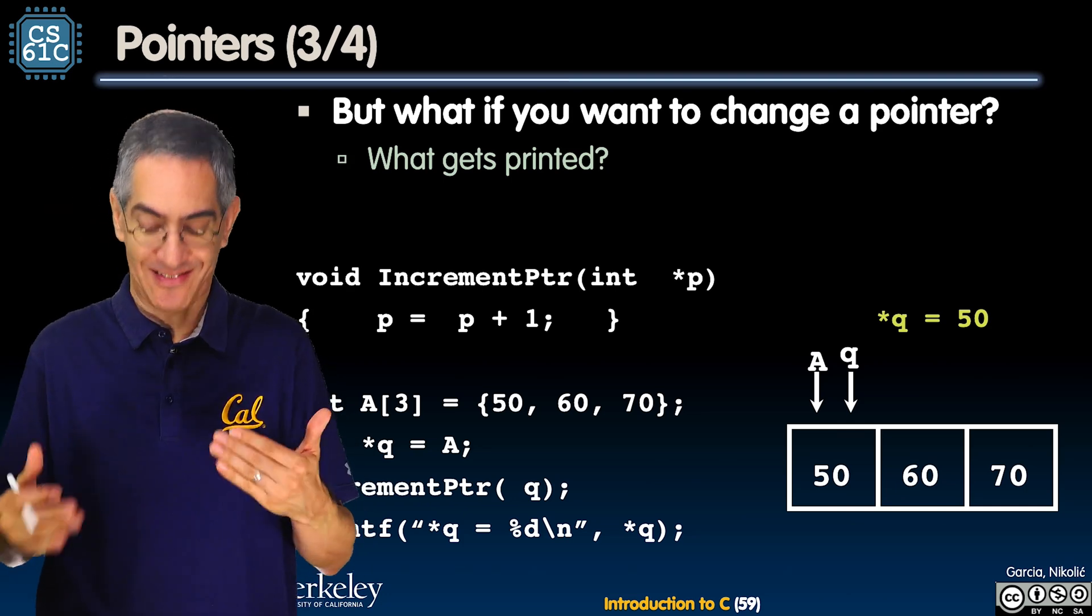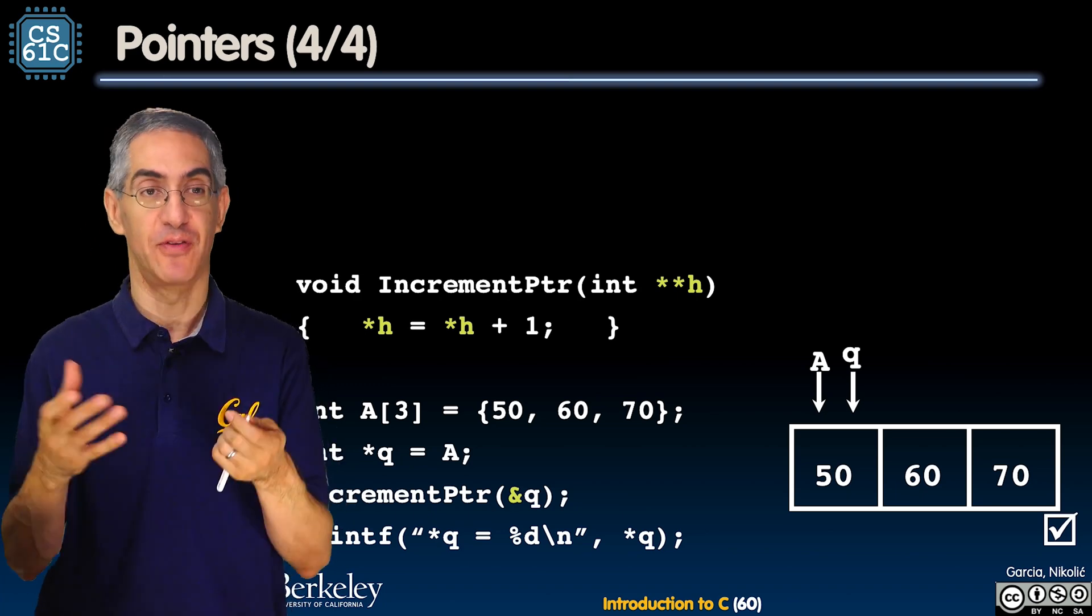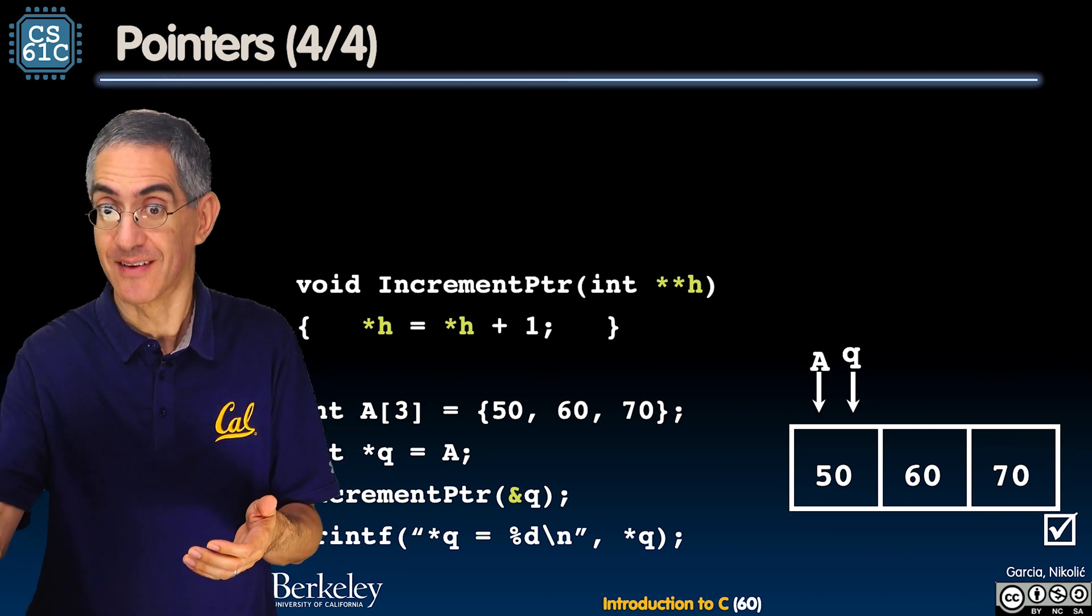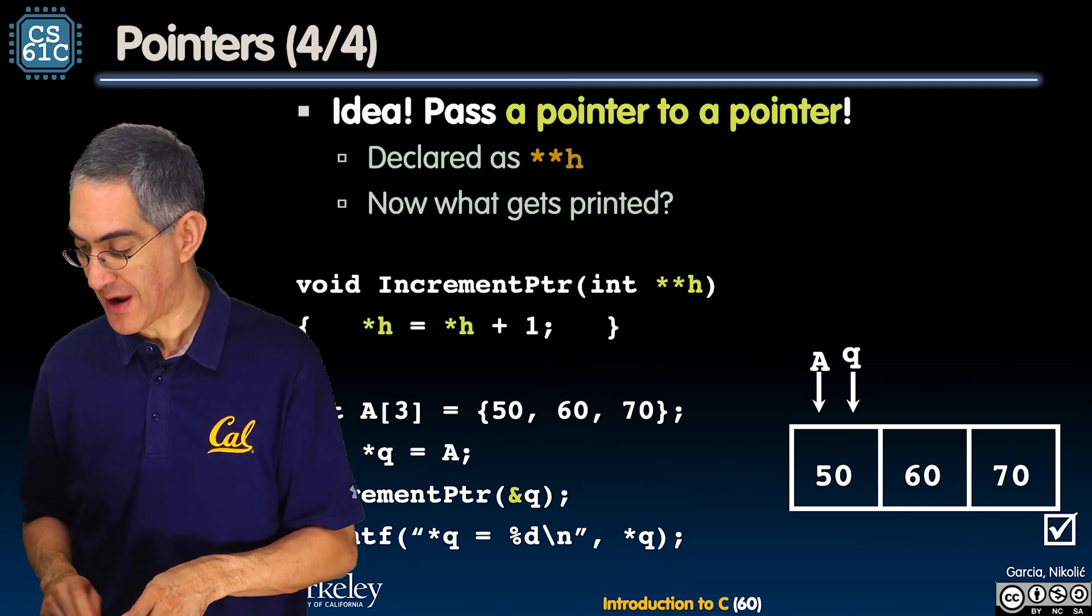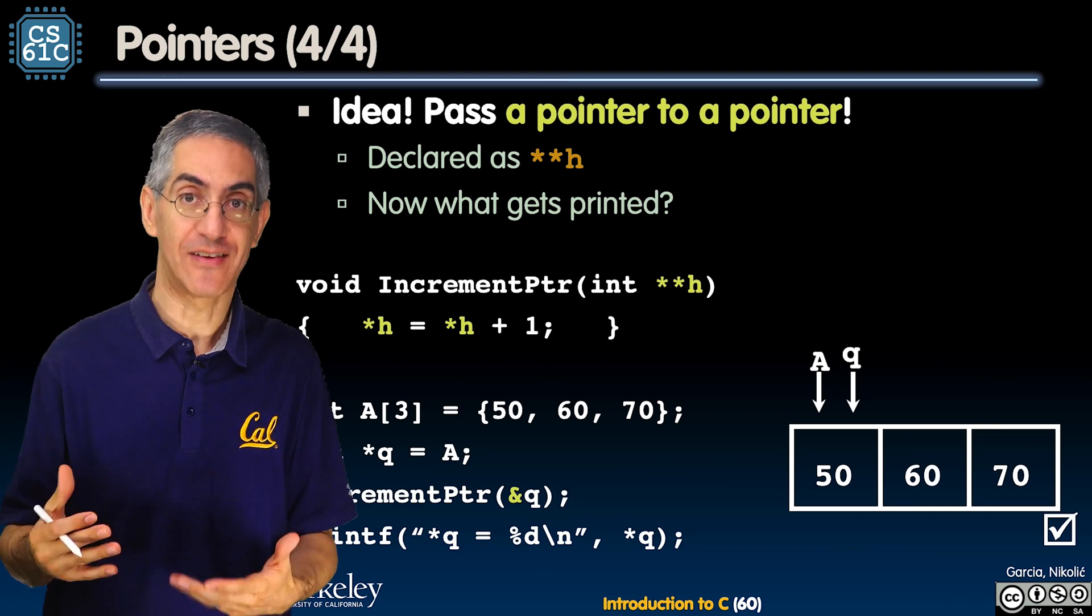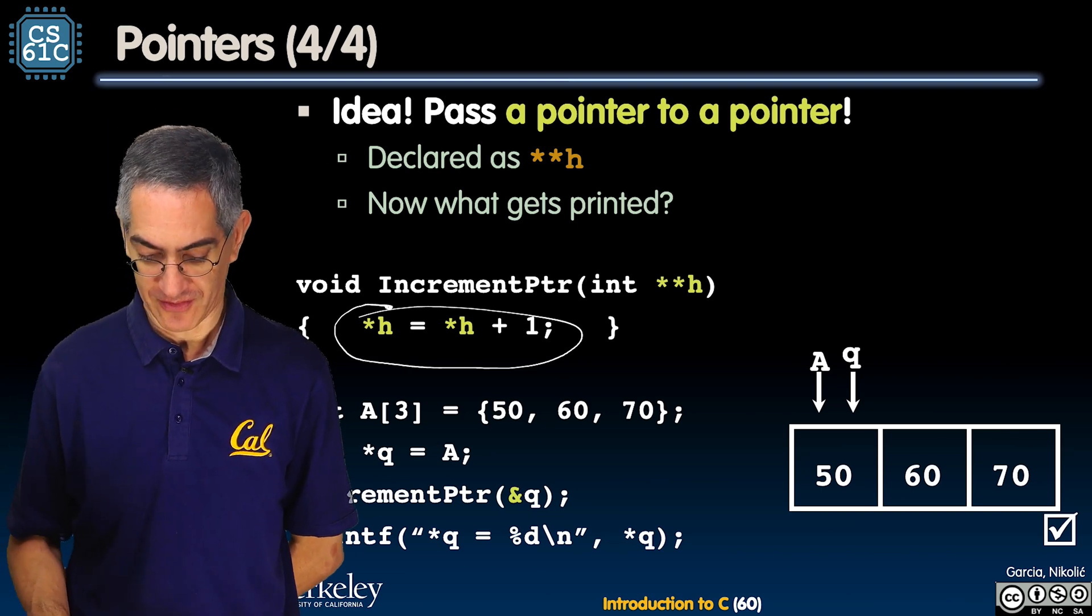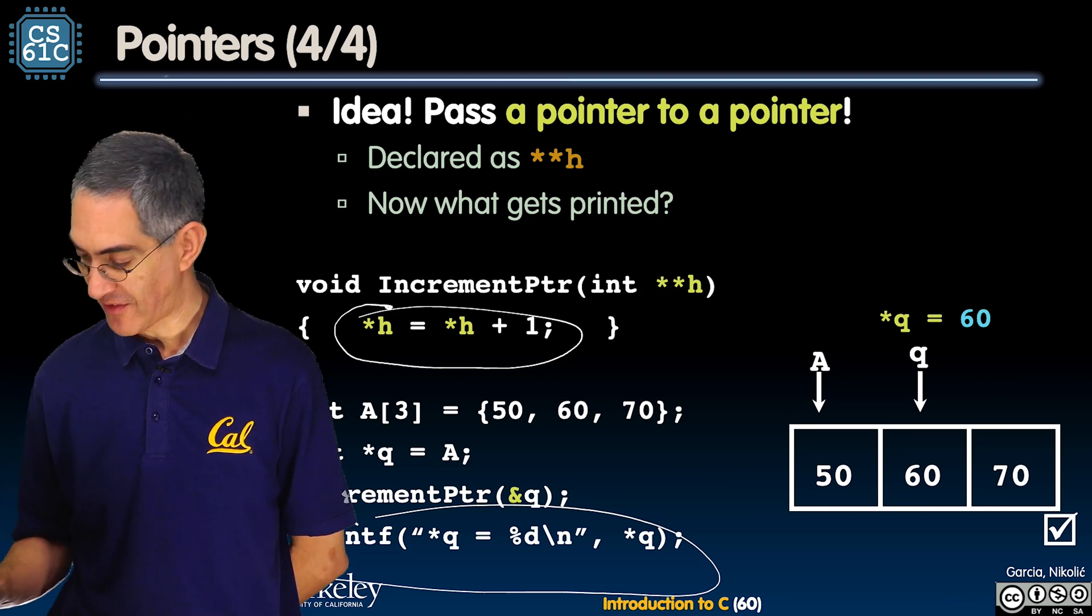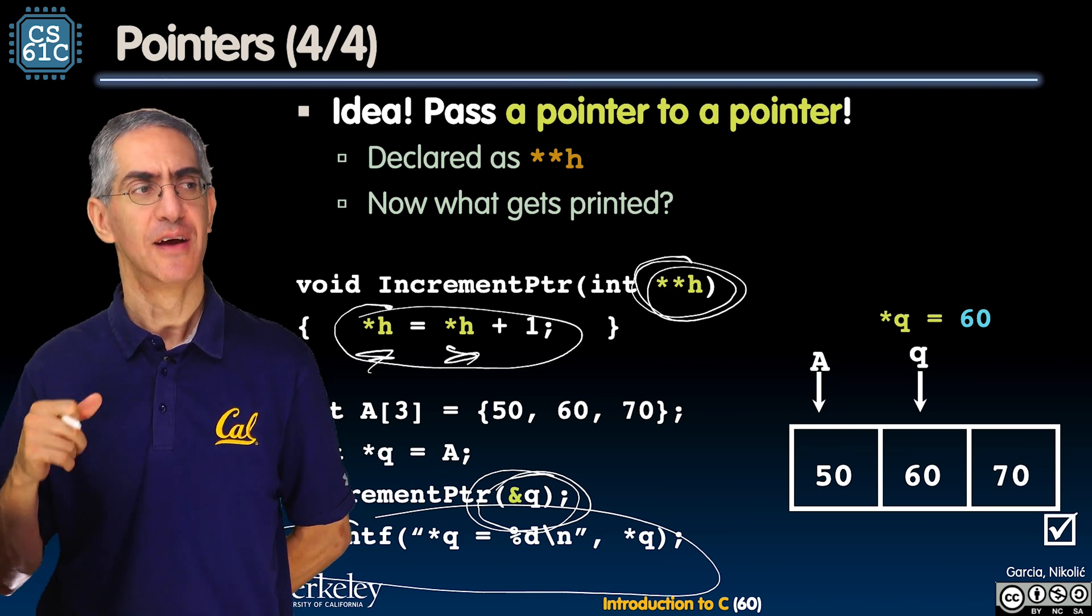So you pass in Q's address. Well now what is the type for the increment_pointer that's receiving that? It's not a pointer to an int, it's a pointer to a pointer to an int. And by the way we call it H - we call this a handle, so it's a pointer to a pointer. H is a handle. So now what gets printed? Now I pass in the address of Q, now I can change Q. **H - the way you get to that, the way you dereference that handle, is you say *H. This is going to move where Q is one over. I run this, Q moves one over and I print *Q.